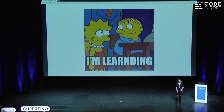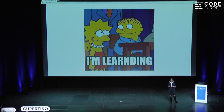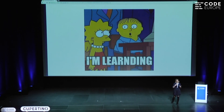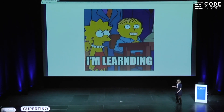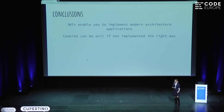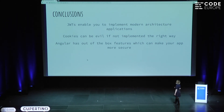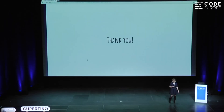That's pretty much everything I wanted to share with you. When thinking about authentication, there are three things to consider: how do you do session management, how are you dealing with security risks, and how can you allow your user to safely navigate your application. As a conclusion: JWTs enable you to implement modern, scalable applications; cookies can be evil if not implemented the right way; and Angular is your friend — it has out-of-the-box features to make your app more secure, and you should leverage the Angular router for navigating your application securely. I hope this was useful. Thank you.